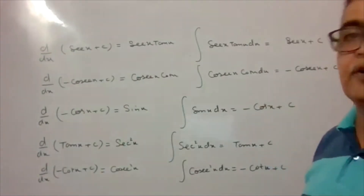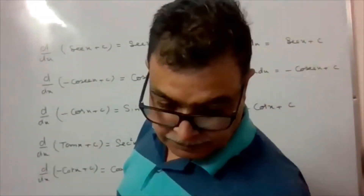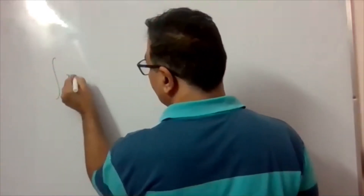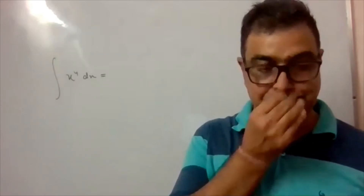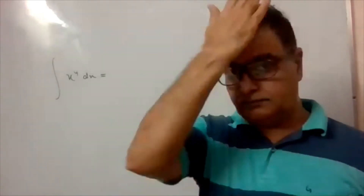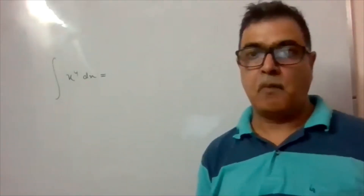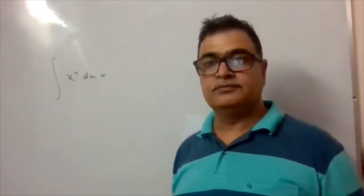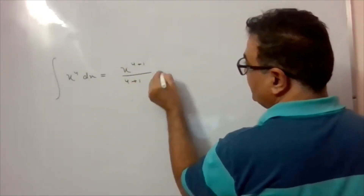Now we will work on some questions based on these results before moving on. First question: integrate x^4 dx. Using formula 1, the answer is x^(4+1)/(4+1) + C = x^5/5 + C.